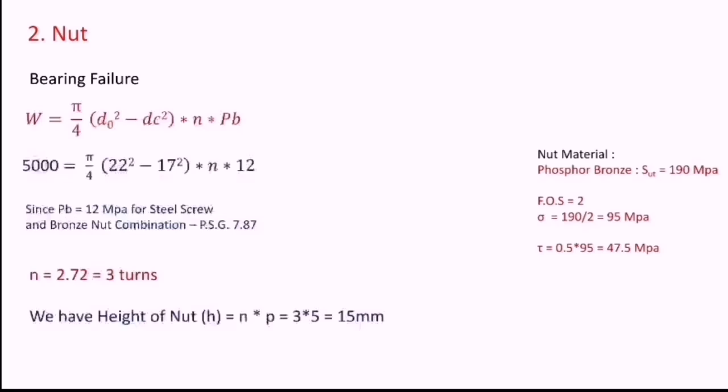Here, I have substituted value of Pb as 12 because we have used material for screw as steel and nut as bronze. From PSG 7.87, I got the value of Pb as 12 for this combination. After finding out n, we can find out height of the nut h by just multiplying n by pitch. So, I will get the height of the nut as 15 mm.